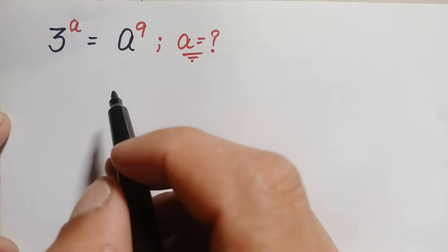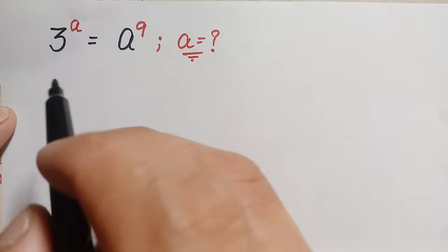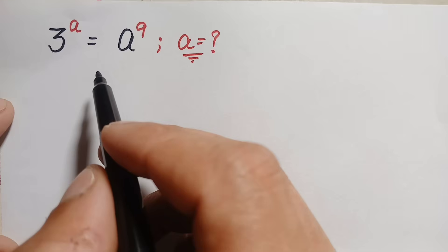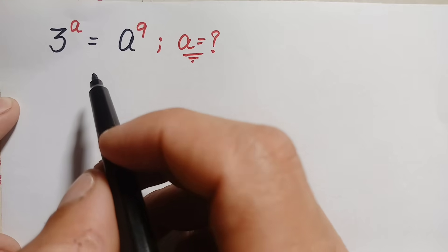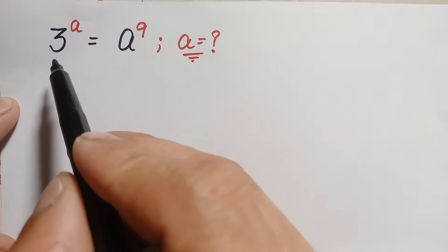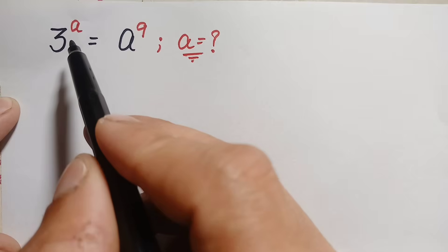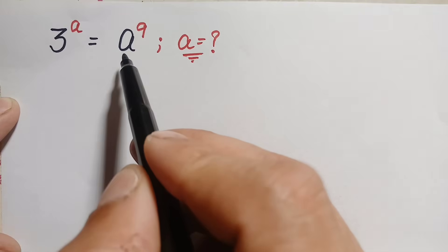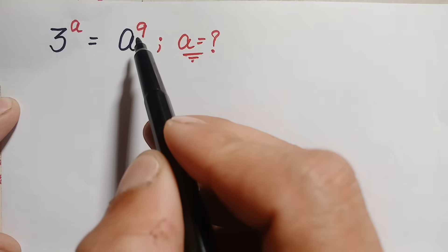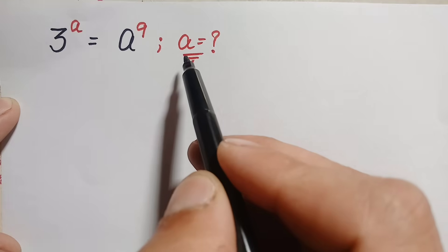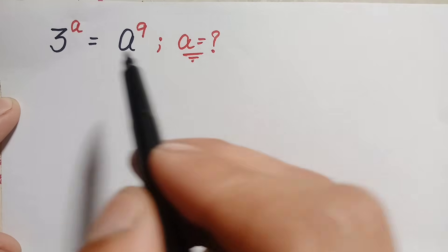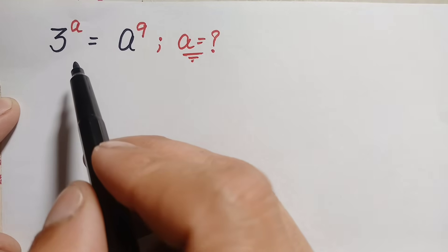Hello everyone, you are welcome. We will solve this beautiful exponential math problem: 3 × 2^a is equal to 8 × 2^9. Here we will find the value of a.